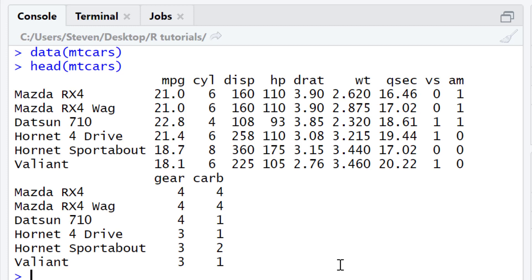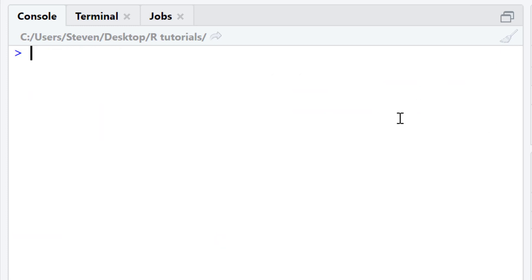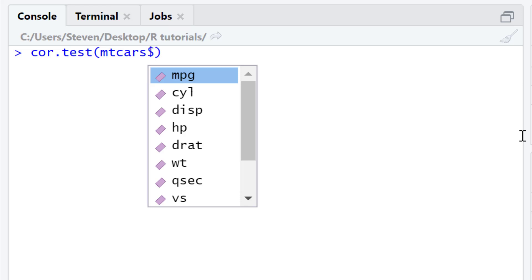I'm going to perform a Spearman correlation test using these two variables. To perform a Spearman correlation test, you can use the cor.test function within R. Simply type cor.test, open bracket, and then you need to write in the two variables that you want to include. I'm interested in the mpg and the hp variables from the mtcars dataset. I'm firstly going to type in mtcars, dollar sign to select my variable, and then mpg for my first variable.